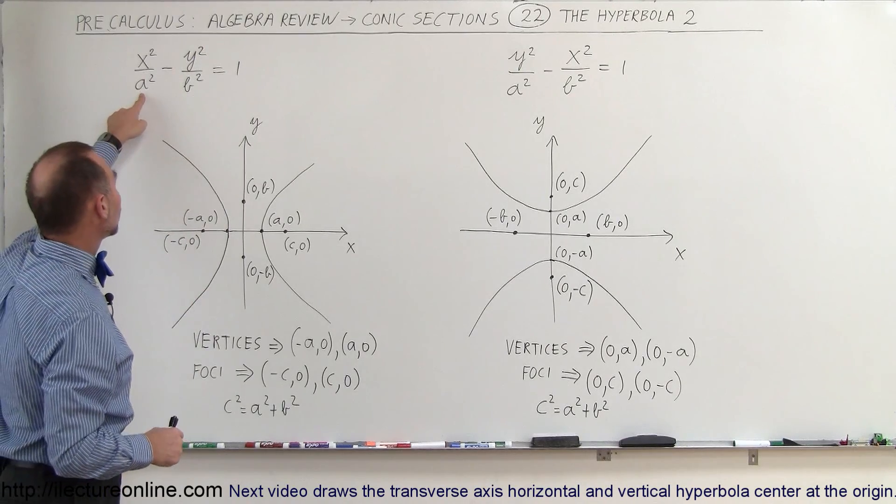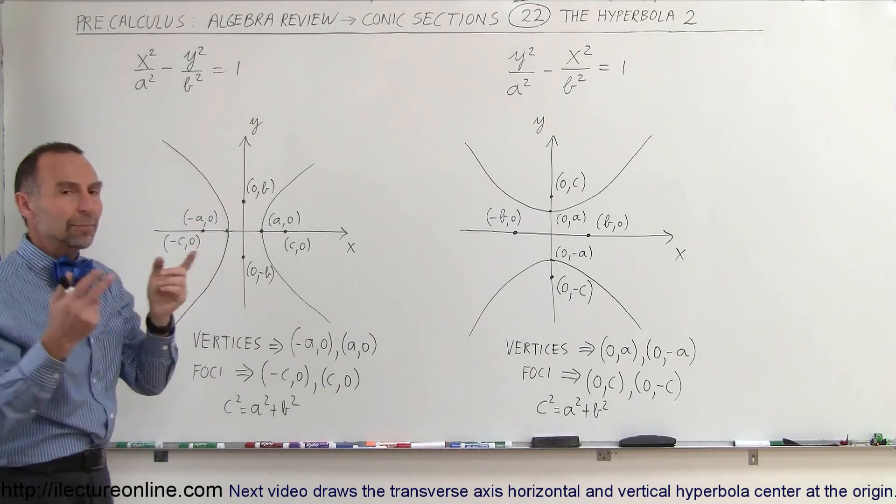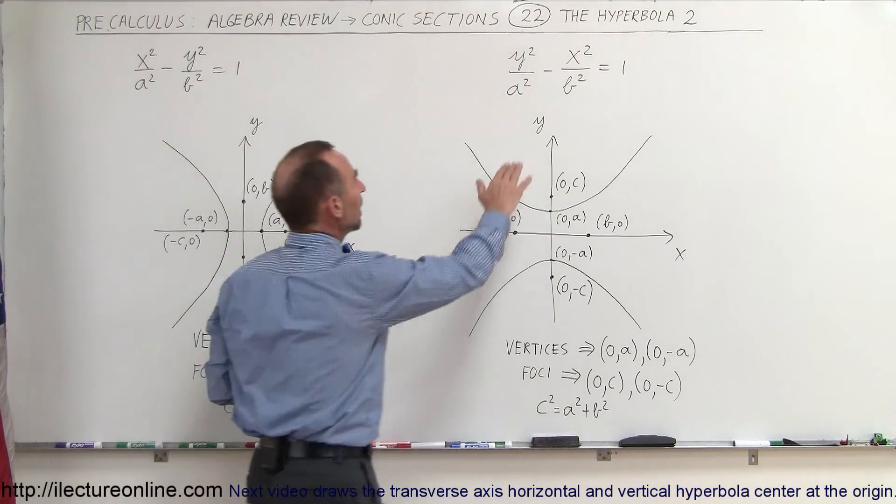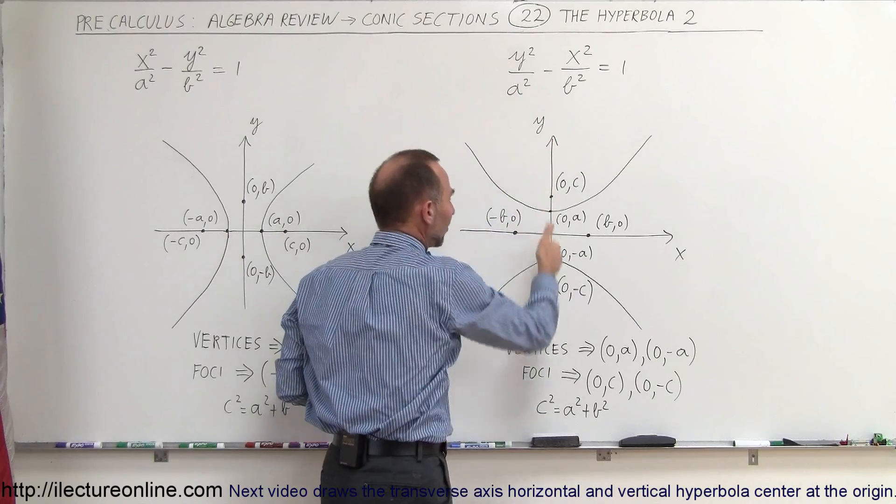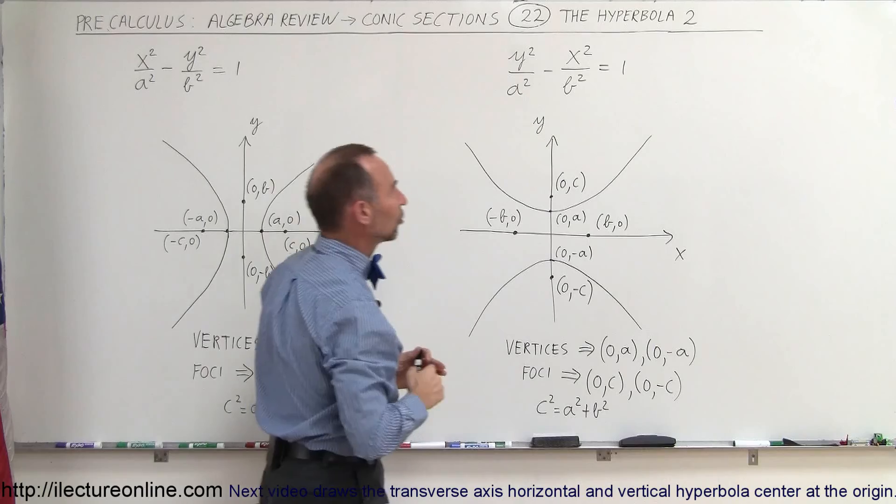Just remember that the A is associated with the focus and B is associated with the axis where the parabola does not touch. Same over here. A is associated with the focus in this case on the y-axis. B is associated with the axis where the graph does not touch.